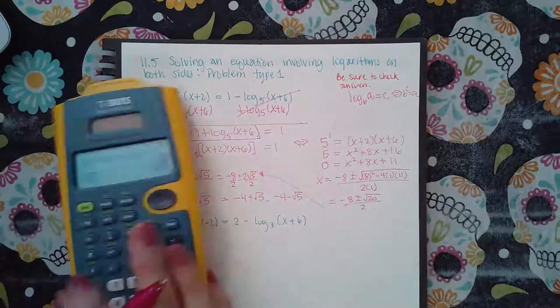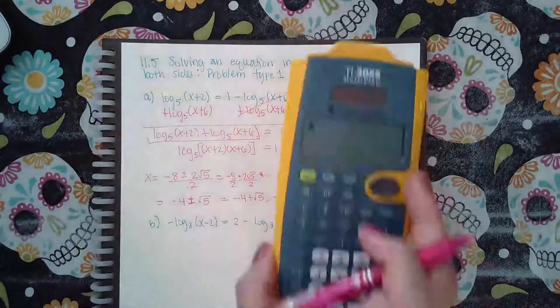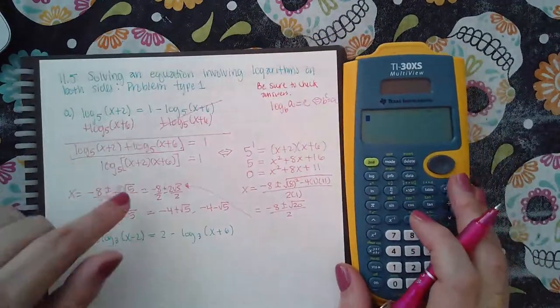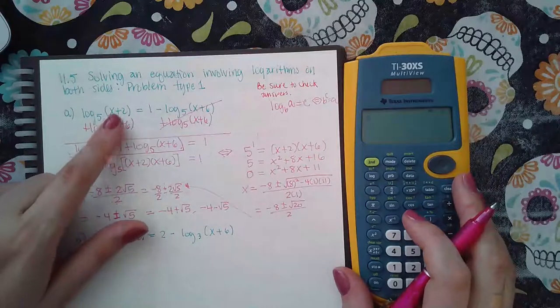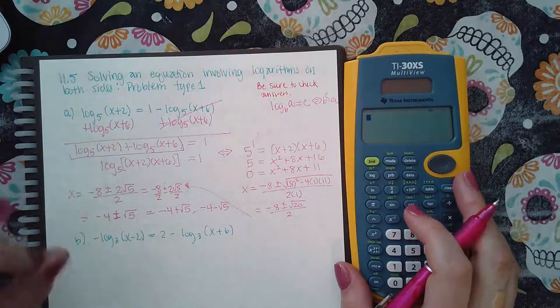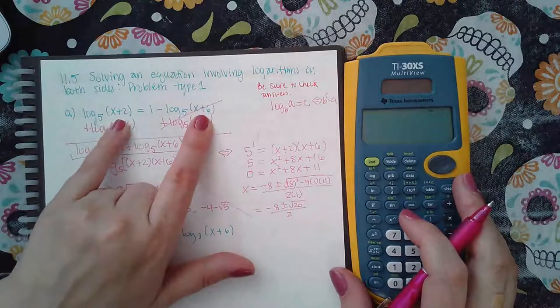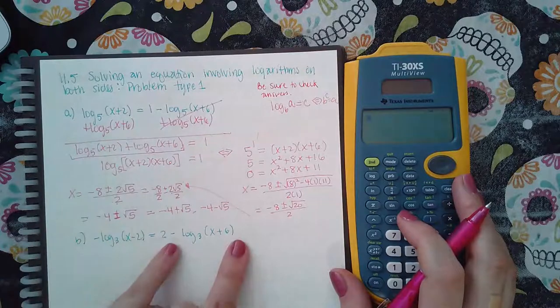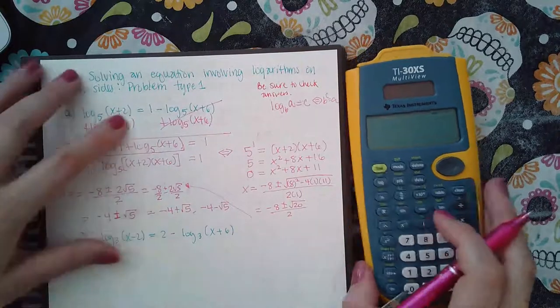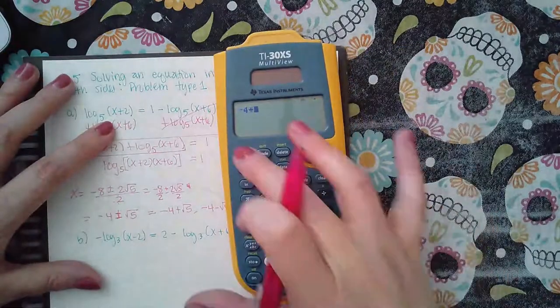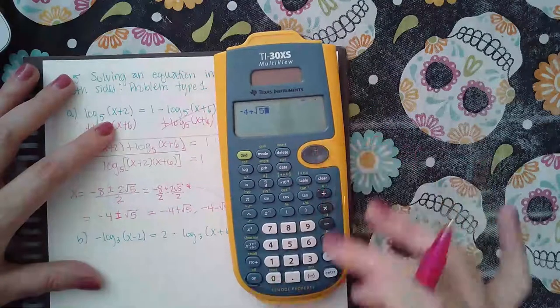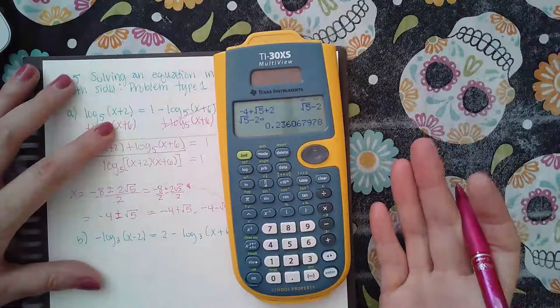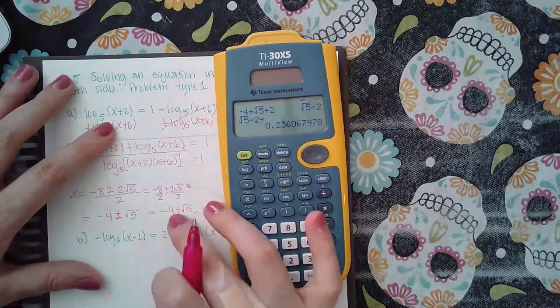So I have negative four plus square root of five, and then I have negative four minus square root of five. Now, let's figure out which ones are solutions first, before we do the decimals. Remember the idea here. The idea is that you cannot have a negative base or a negative argument. But my variables are in the arguments. So I need to make sure that one of these guys is not going to be a negative value, given these two numbers. So the first thing I'm gonna do is I'm gonna say negative four plus the square root of five, plus two. Let's see what decimal that is. That's a positive answer. So we're good for the first one.